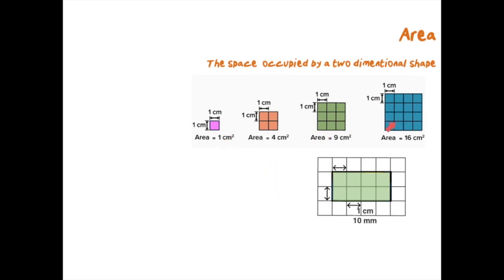We did it for squares but we can also do it for rectangles. In this shape there are four blocks in the length and two in the width, meaning that four multiplied by two will give me eight centimeters squared.